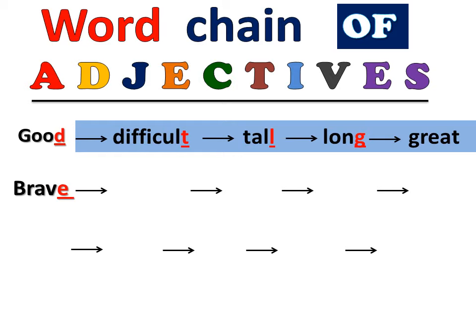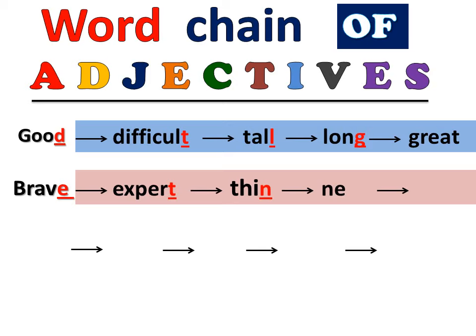Brave. Brave is an adjective. Its last letter is E. From E we form Expert. From T we formed Thin, from N we formed New, and from W we formed Wet. In this way, complete the word chain of adjectives.